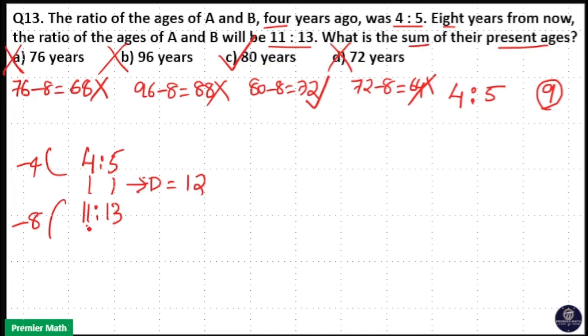So to make it equal, take the horizontal difference, which is 2, and multiply it with 4 is to 5. Take the horizontal difference of 4 is to 5, which is 1, and multiply it with 11 is to 13. So that means 4 into 2 is 8, 5 into 2 is 10. Here 11 is to 13 into 1 is 11 is to 13.